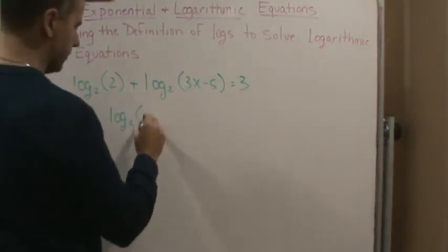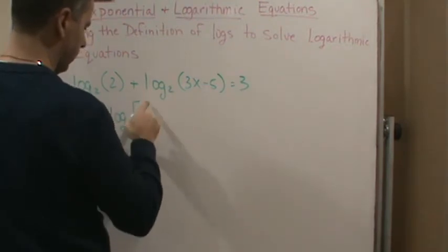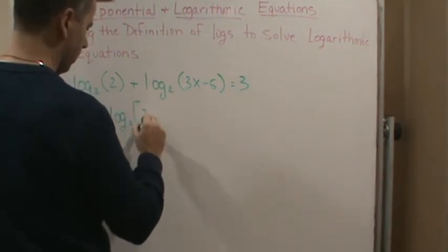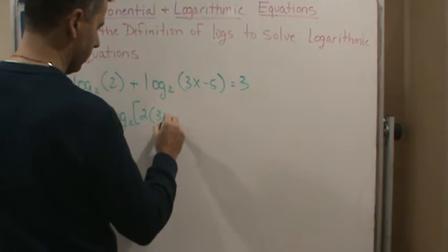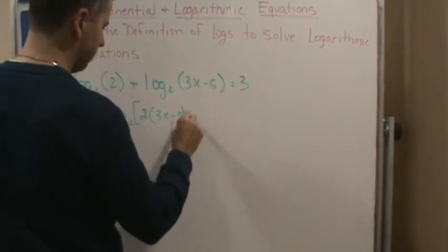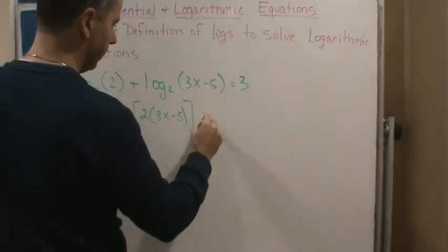So if we write this as one log, we get log base 2 of what? It's going to be 2 times 3x minus 5 is equal to 3.